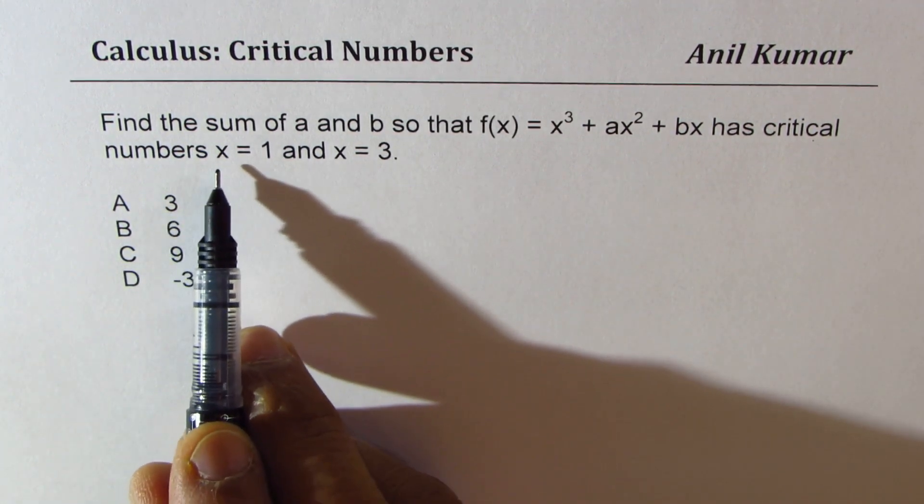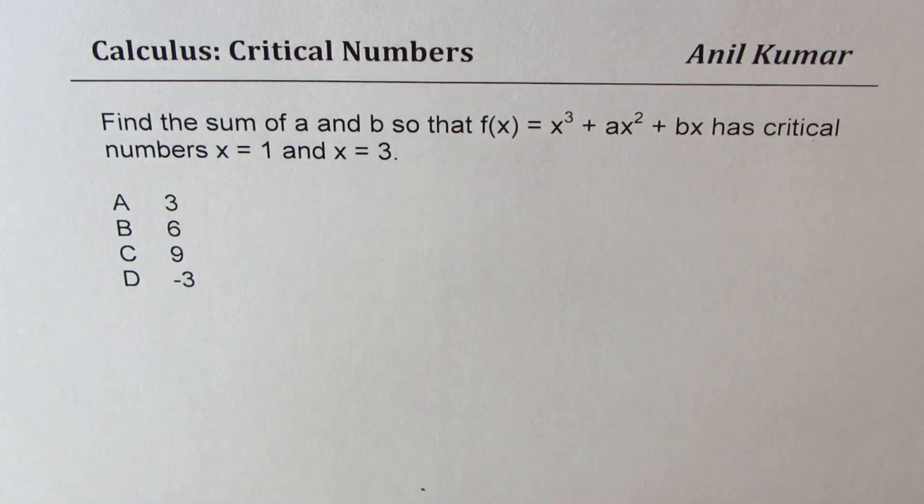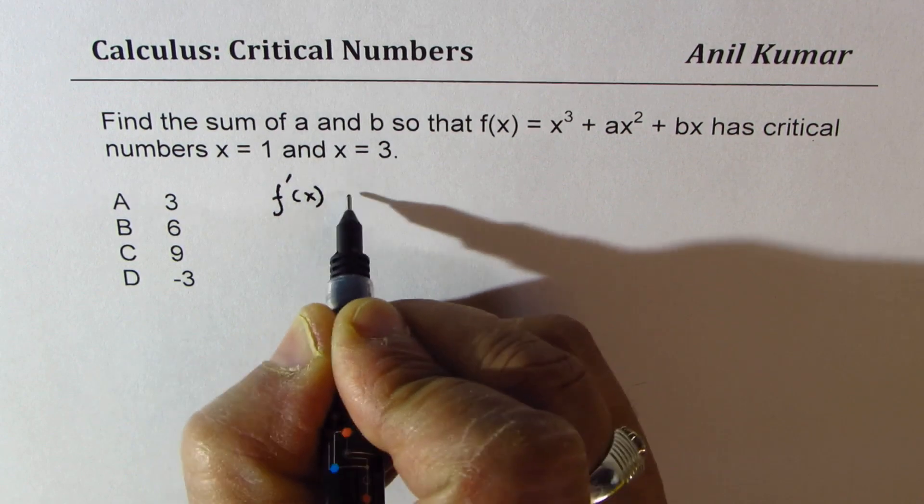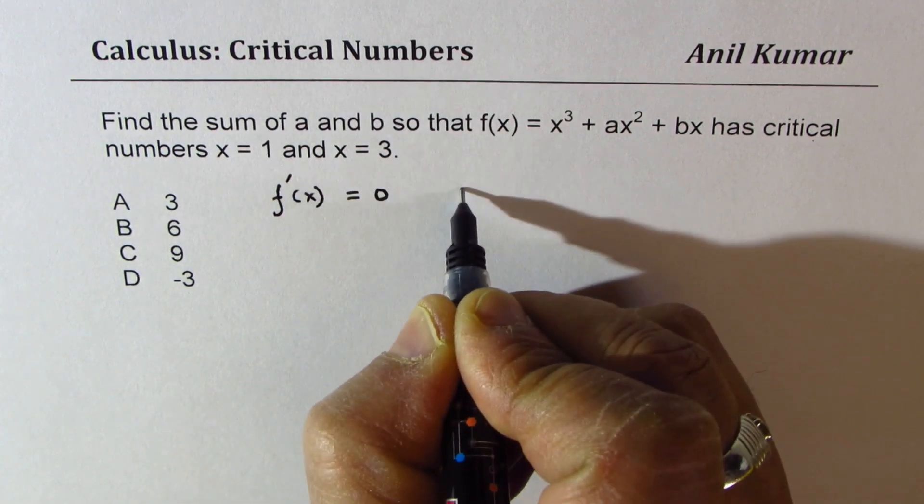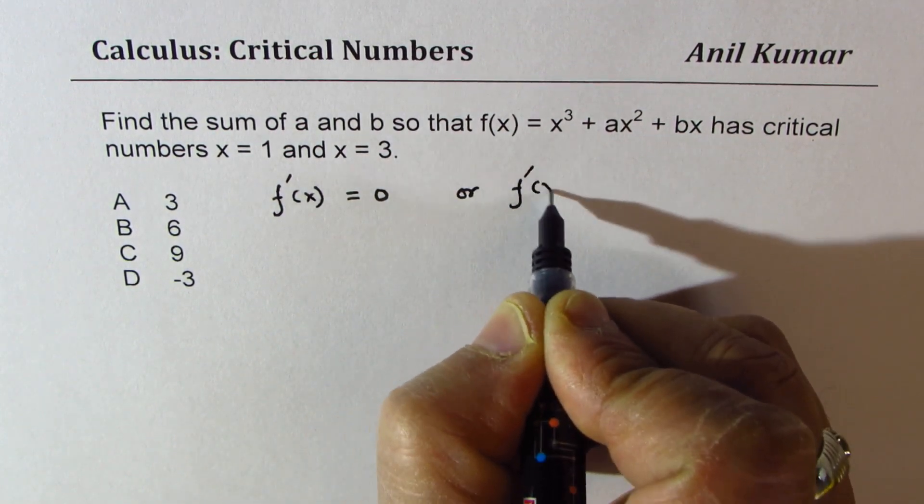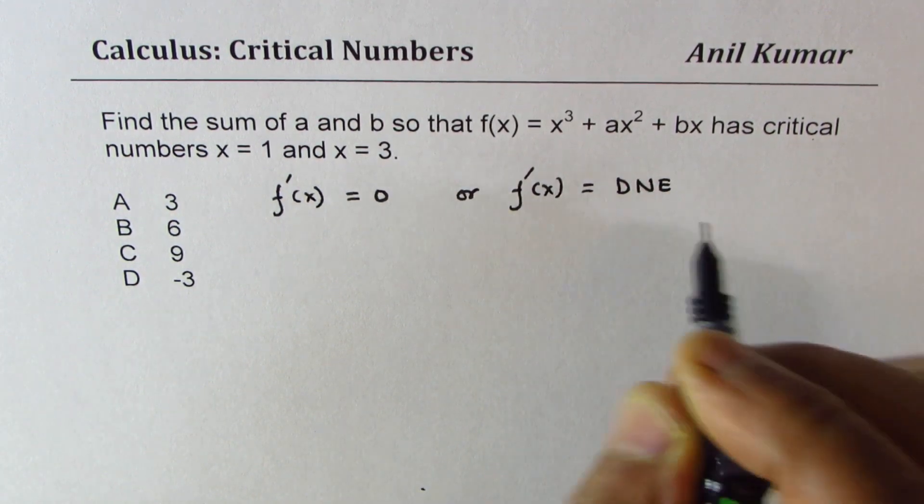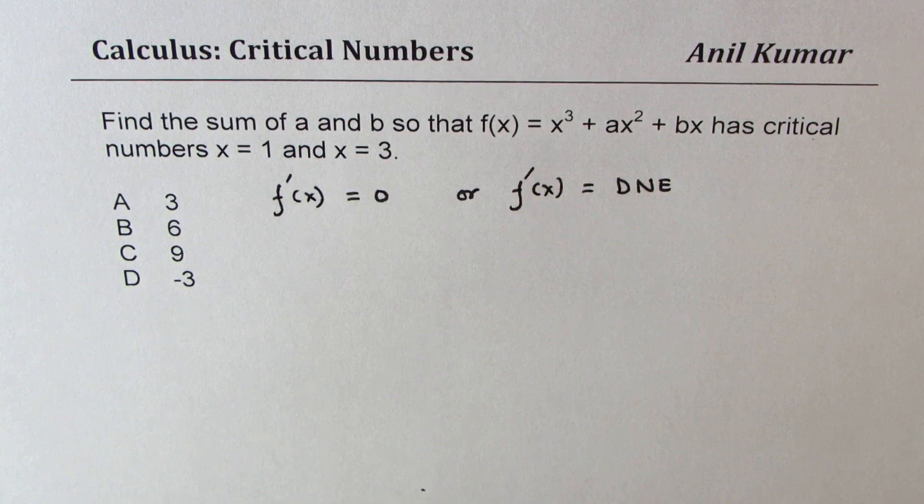It really means that the derivative of the function is either 0, or the derivative of the function does not exist. That leads to critical numbers, right? So this leads to critical numbers. So let's find the derivative of the function given to us.